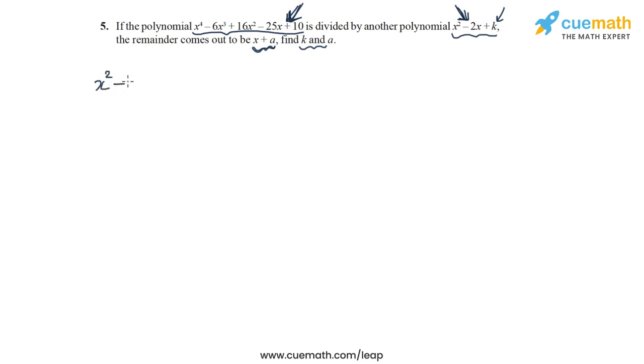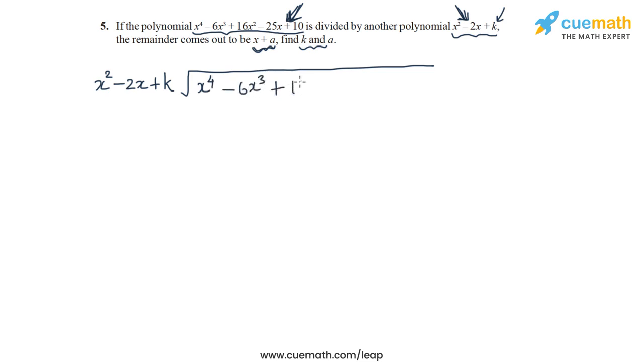Let's apply long division to this dividend polynomial — the fourth degree polynomial — with the divisor being the quadratic polynomial. First, let's write the divisor: x squared minus 2x plus k. Then the dividend: x to the 4 minus 6x cubed plus 16x squared minus 25x plus 10.